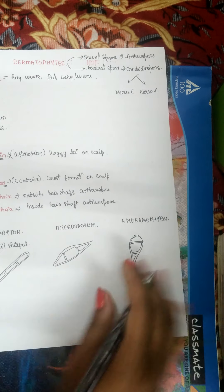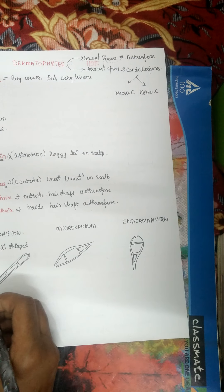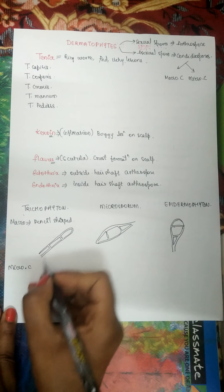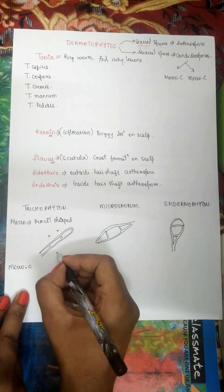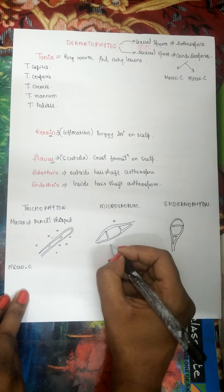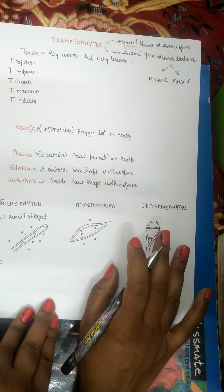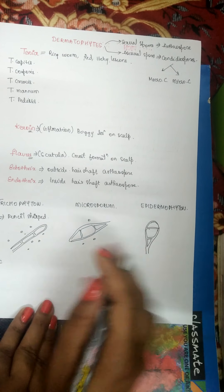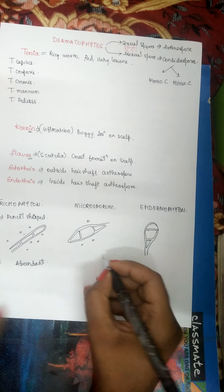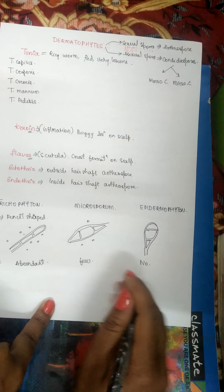Regarding microconidia: Trichophyton has numerous microconidia; Microsporum has only a few microconidia; and Epidermophyton has no microconidia at all.